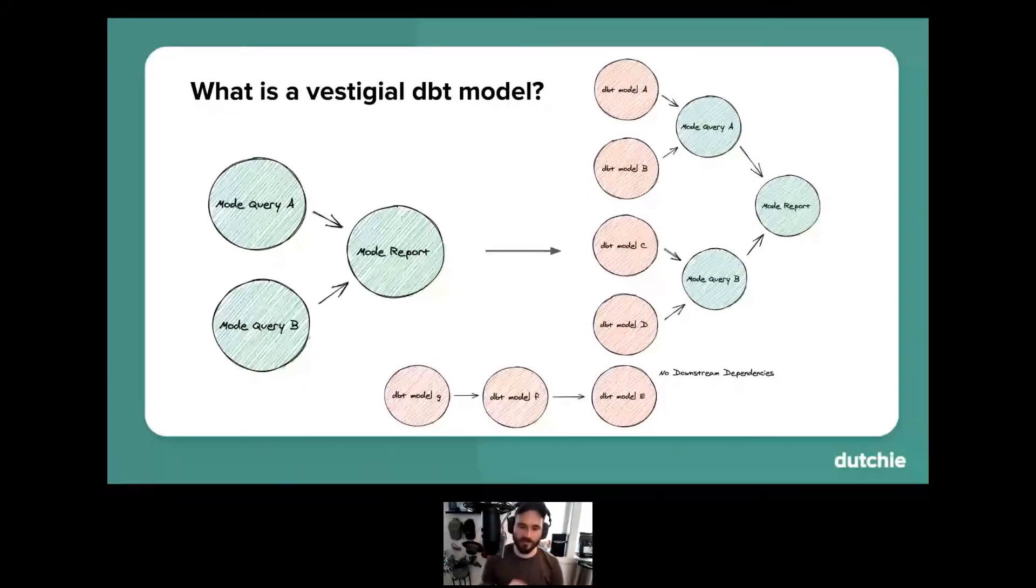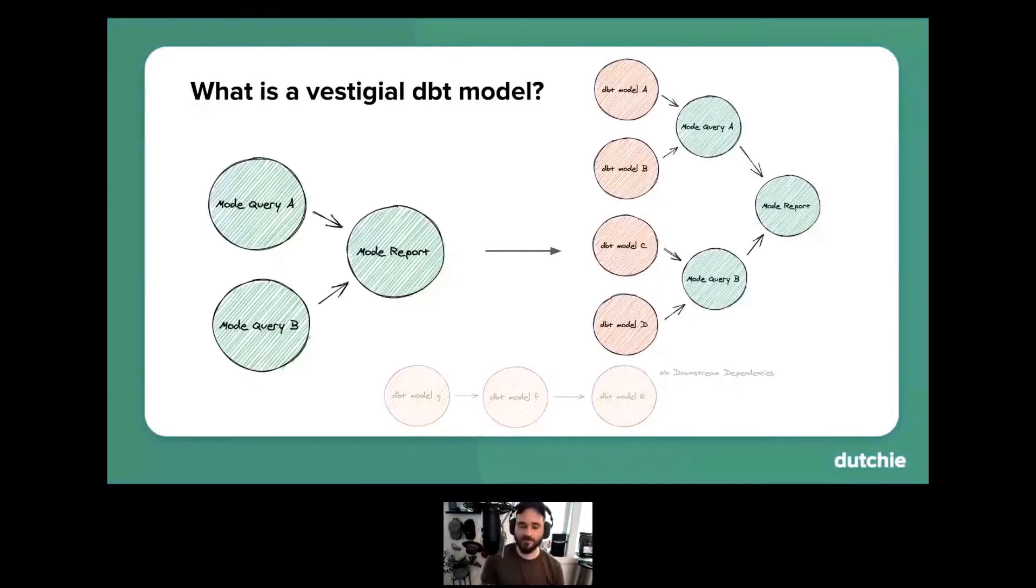So at this point, once we have the horizontally extended graph, it becomes pretty easy to identify DBT models that don't have any downstream dependencies. Additionally, having these relationships in this graph made it pretty easy to do this process recursively as well. So any model that had no recursive downstream path to an external dependency was deemed a candidate to be pruned. So you can see here, for example, in our graph, DBT model G, F, and E would all be deemed candidates for pruning because there's no recursive downstream path to any external data assets.